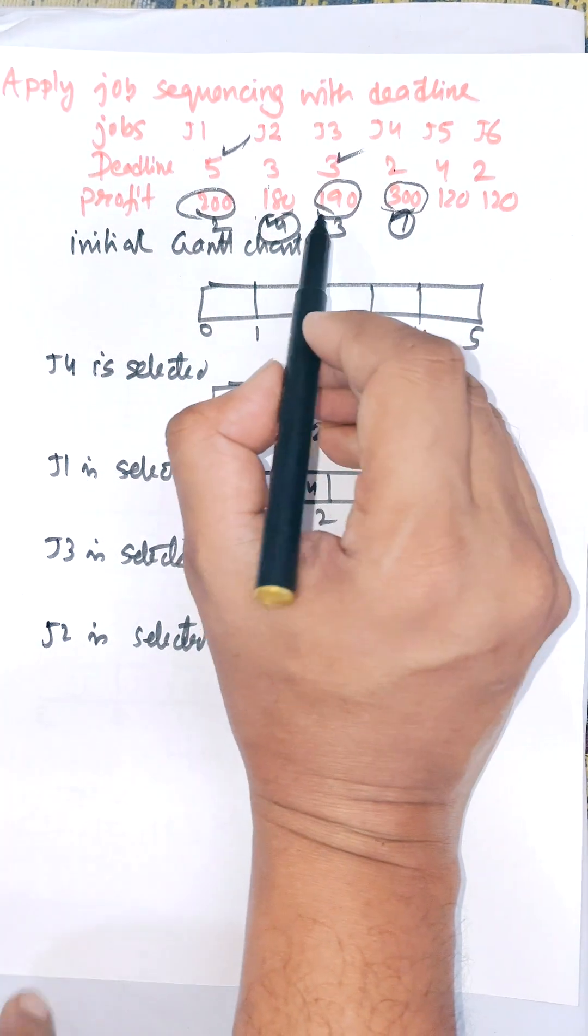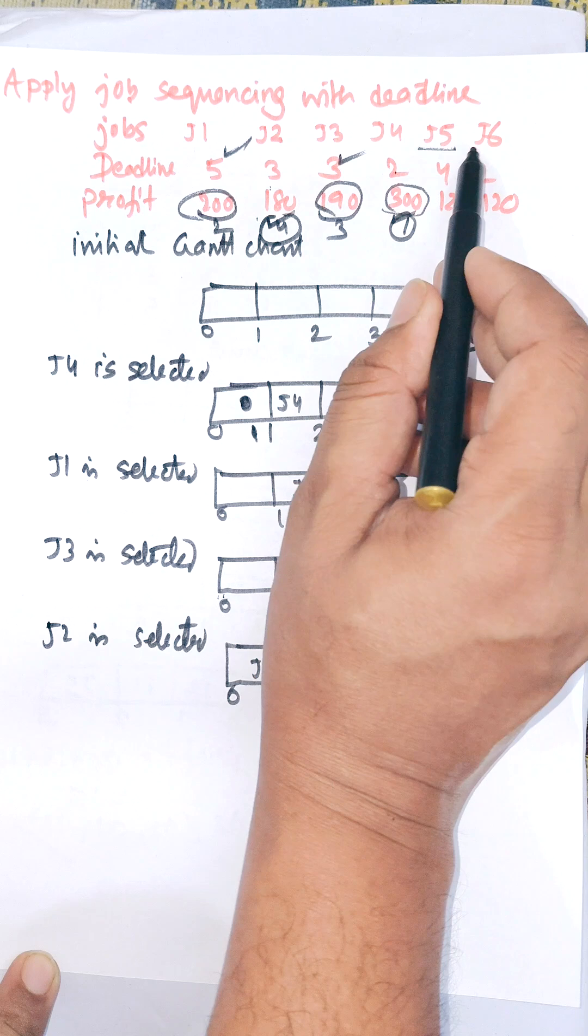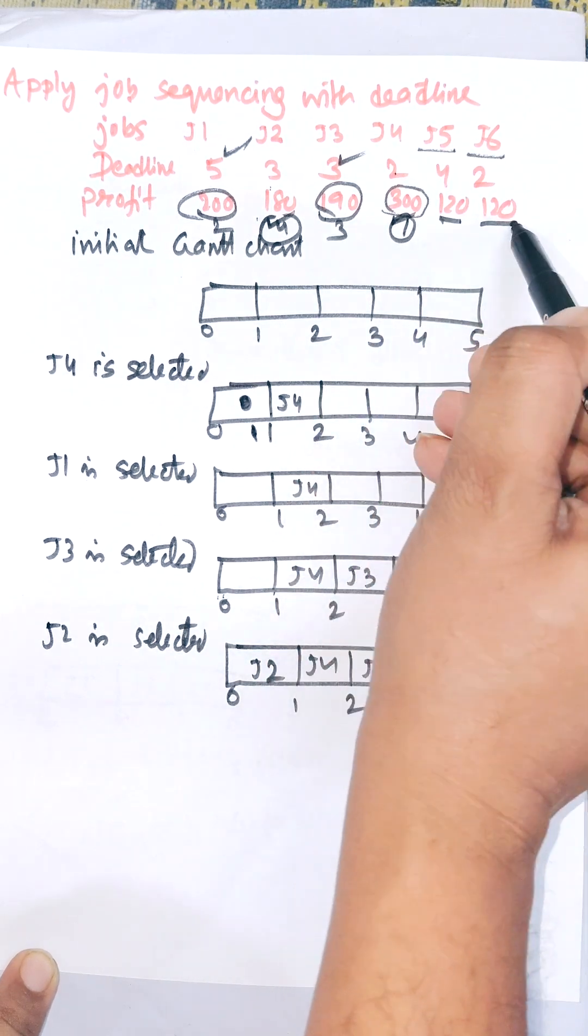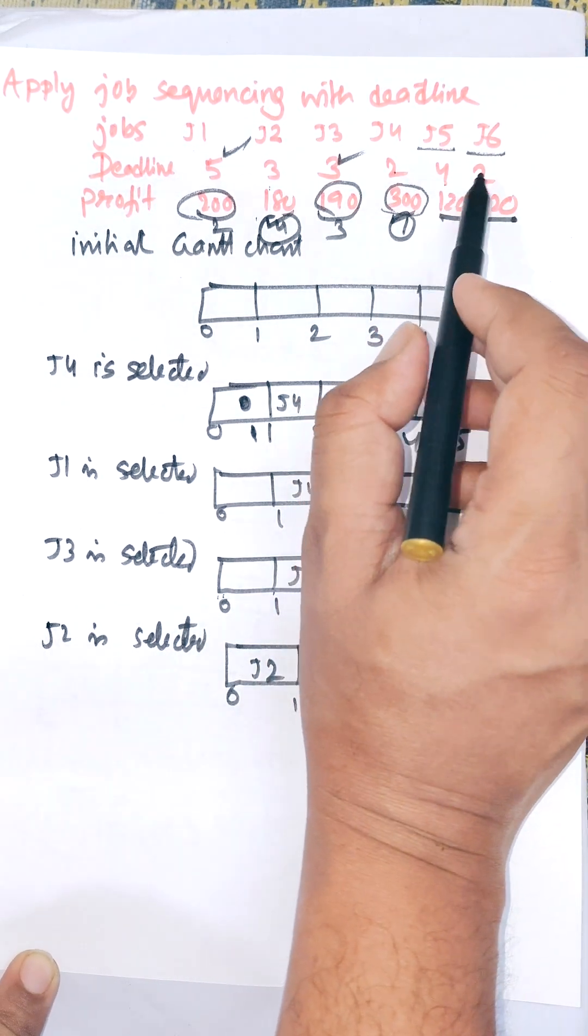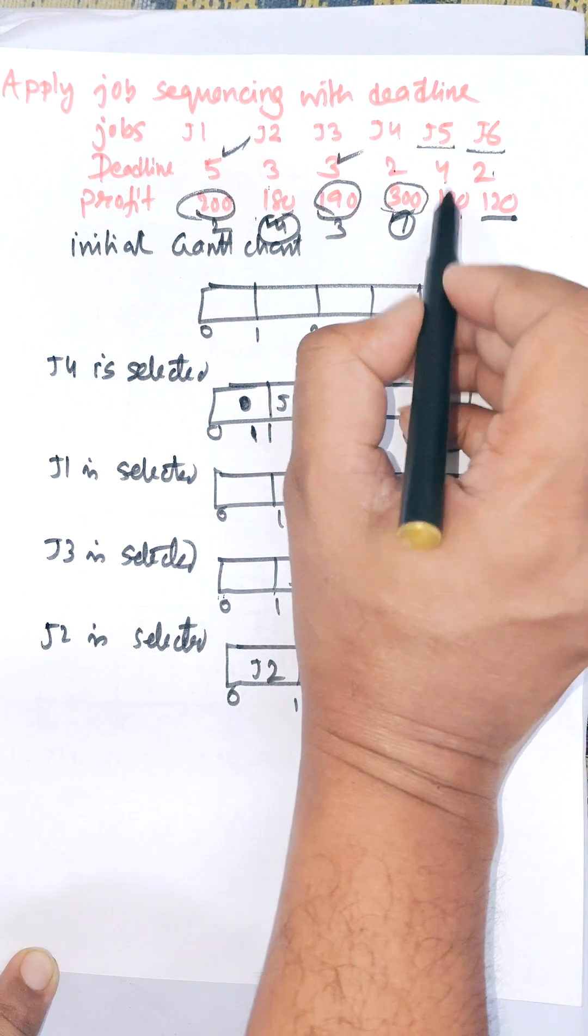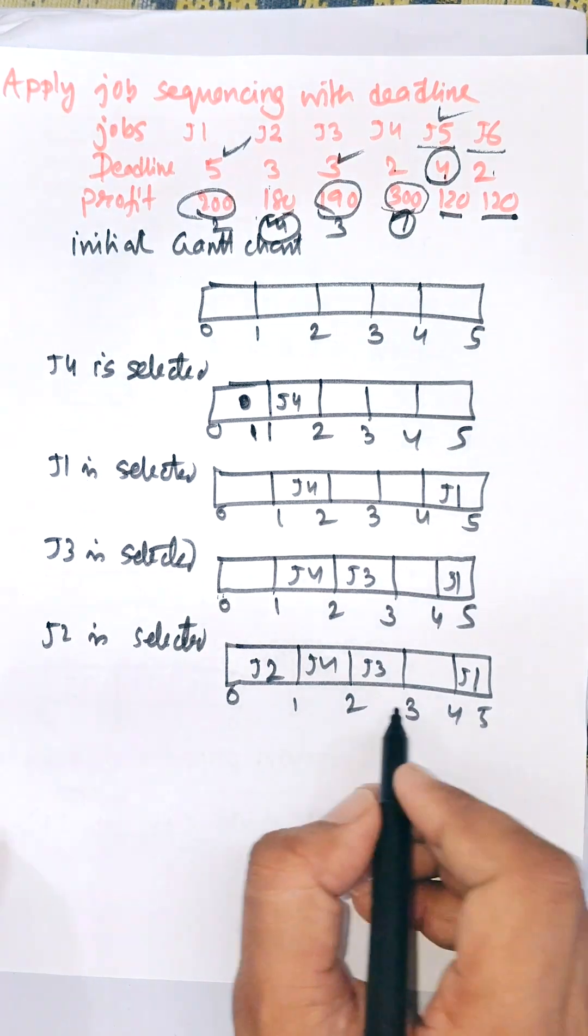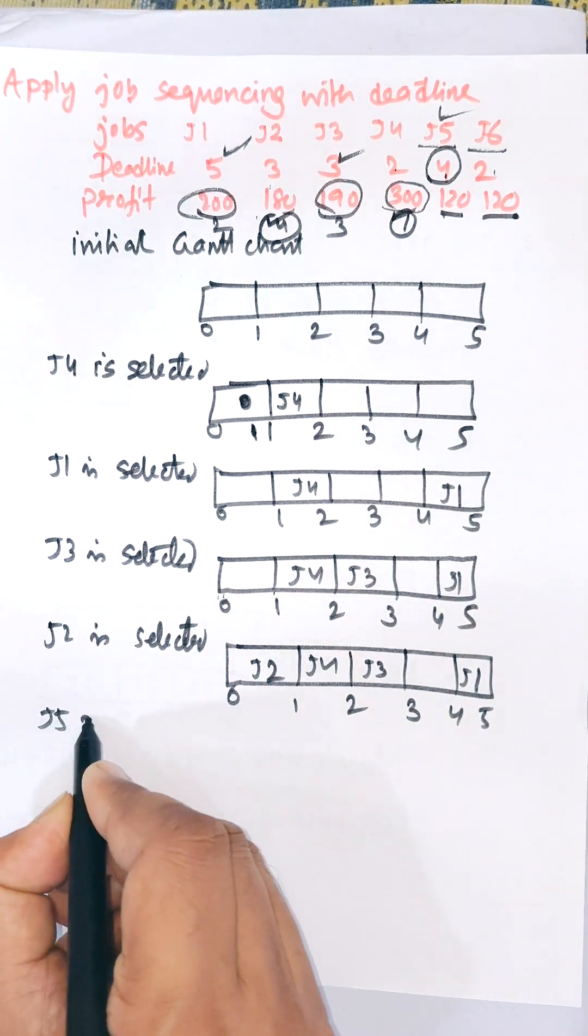And next one, next one is - there is either we need to select J5 or J6, both are 120. But when we select J4, J2, then there is no slot available. So when we select J5, there is a deadline of 5, so we can easily put it in between 3 to 4.